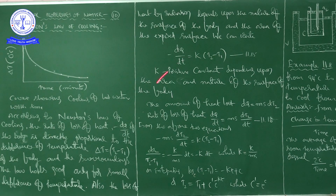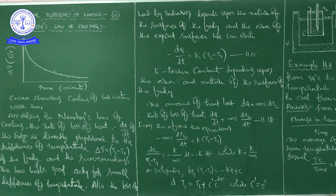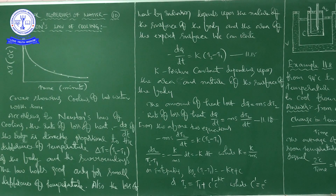So we write the expression: minus dq/dt = k(T2 − T1), where k is a positive constant which depends upon the area and nature of the surface of the body. Suppose a body of mass m and specific heat capacity s is at temperature T2. Let T1 be the temperature of the surroundings.